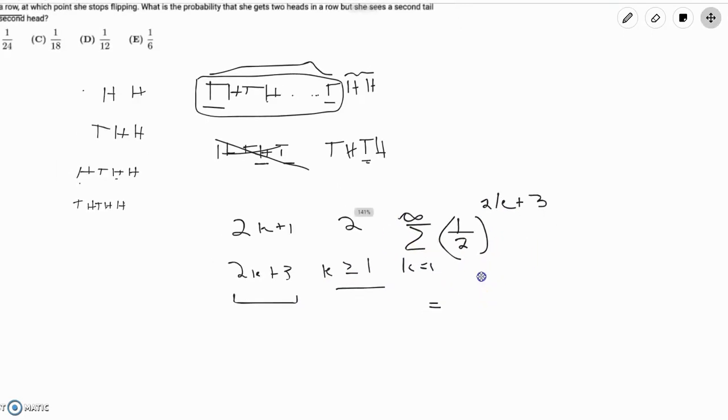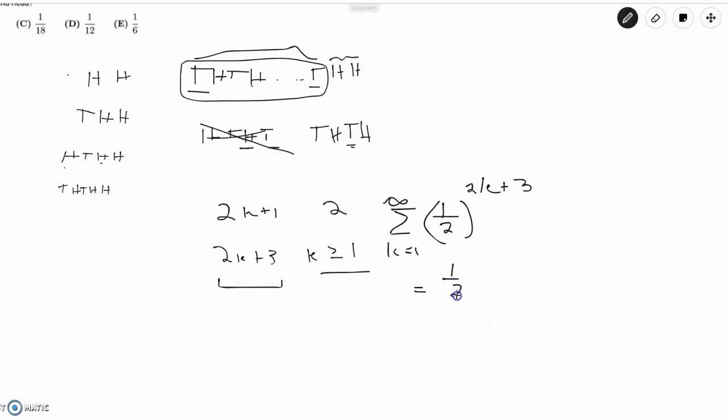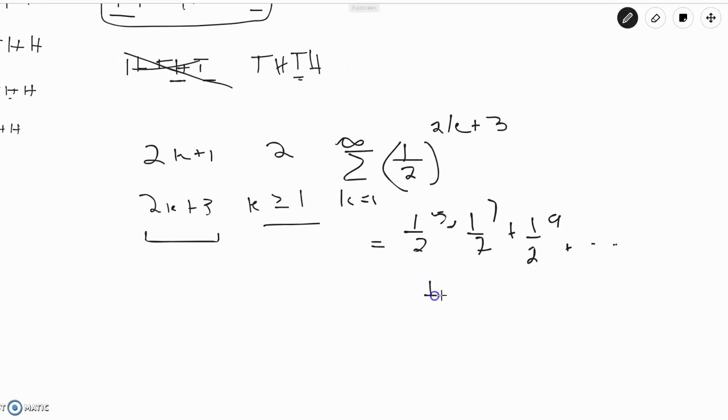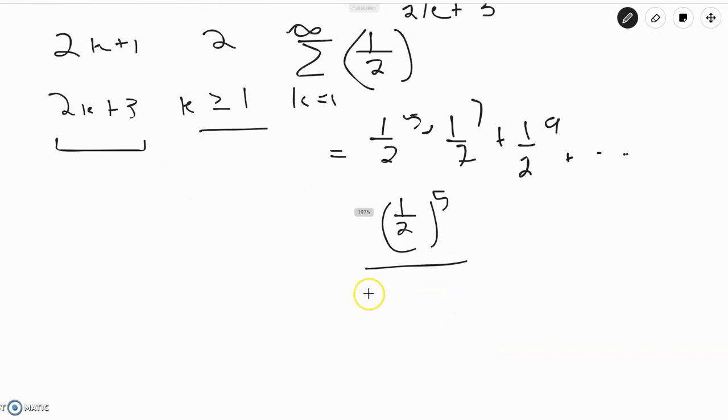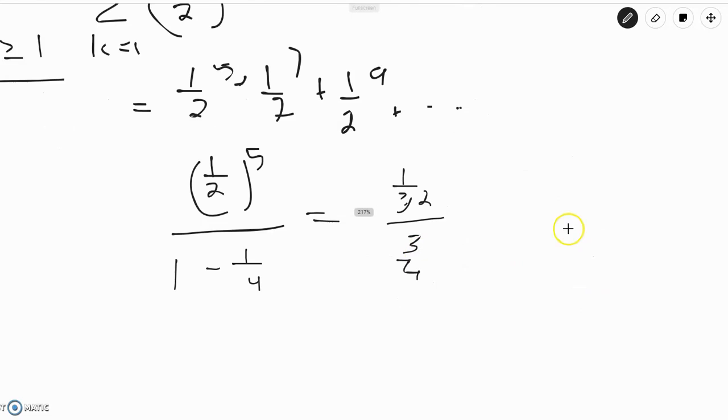And this is obviously equal to a geometric series, which is equal to one half to the fifth, plus one half to the seventh, plus one half to the ninth, and so on. And we see that our first term is equal to one half to the fifth. And our common ratio is one fourth. So, the sum of the series is equal to one half to the fifth, over one minus one fourth, which is equal to one over thirty-two, over three fourths. This is equal to one over twenty-fourth.